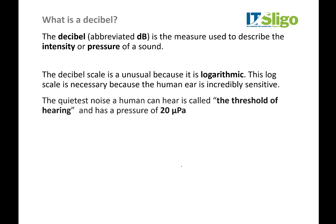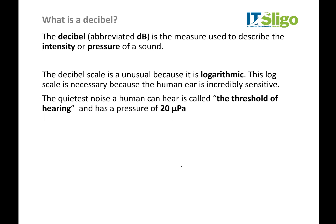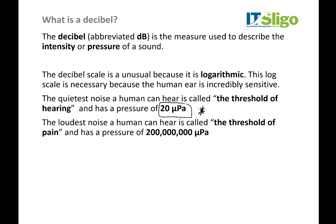This log scale is necessary because the human ear is so sensitive. The lowest sound we can hear is called the threshold of hearing, and it has a pressure of 20 micropascals — this becomes our reference level later on in calculations. The loudest noise a human ear can hear is called the threshold of pain, and this is 200 million micropascals. So there's a range of 10 million — the loudest sound is 10 million times louder than the quietest. When we have such a large range of possible inputs, we often use a log scale to describe them.